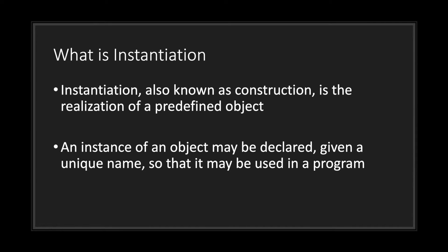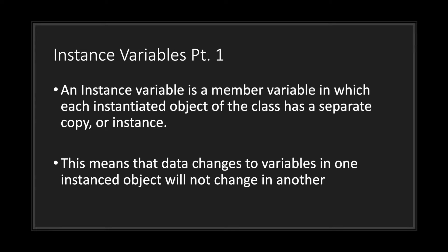We need to introduce a new word: instantiation, also known as construction. Instantiation is the realization of a predefined object. An instance of an object may be declared and given a unique name so that it may be used in a program. We also need to understand what exactly an instance variable is.